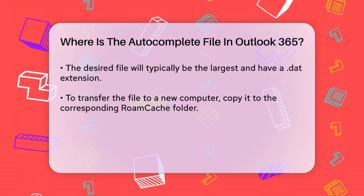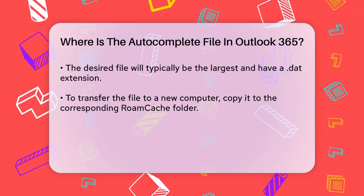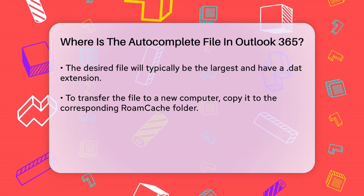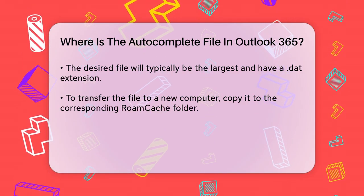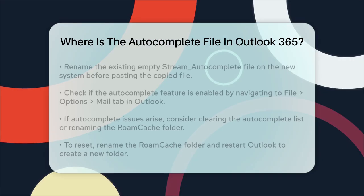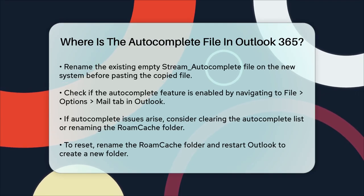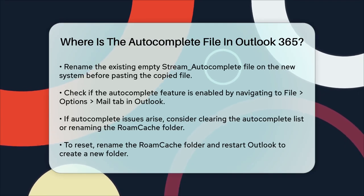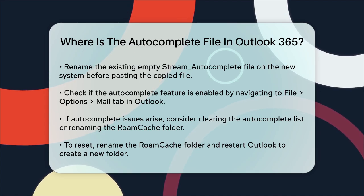If you encounter any issues with autocomplete not working, you might need to check if the feature is enabled in Outlook. Go to File > Options, select the Mail tab, and ensure the box next to 'Use Autocomplete List to suggest names when typing in the To, CC, and BCC lines' is checked.